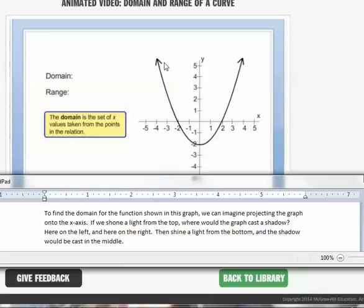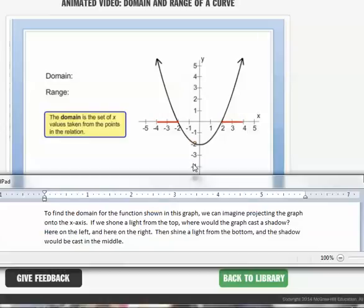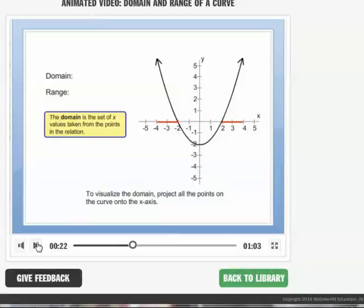To find the domain for the function shown in this graph, we can imagine projecting the graph onto the x-axis. If we shone a light from the top, where would the graph cast a shadow? Here on the left and here on the right. Then think of shining a light from the bottom and see where the shadow would go. The shadow would be cast from the bottom if we shine the light up. The shadow would go here in the middle.